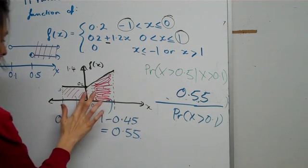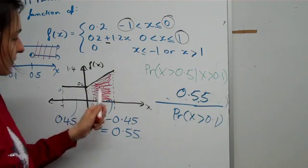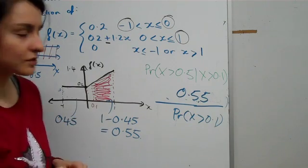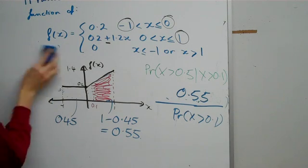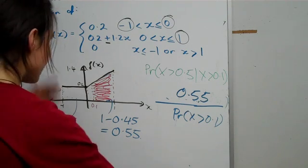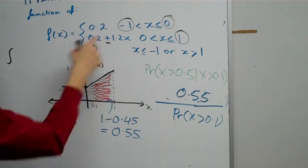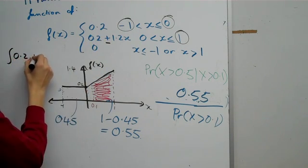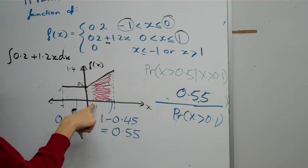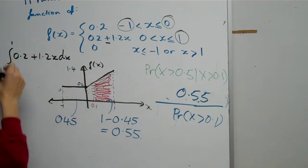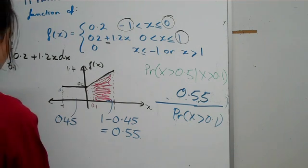Not that one anymore. So basically we need to set up another integral to figure out the area from 0.1 onwards. And we're going to find the integral of the line. So we're going to go integral of 0.2 plus 1.2x dx. And we know that the upper limit is 1, the lower limit is 0.1. So I'm just going to quickly solve that.